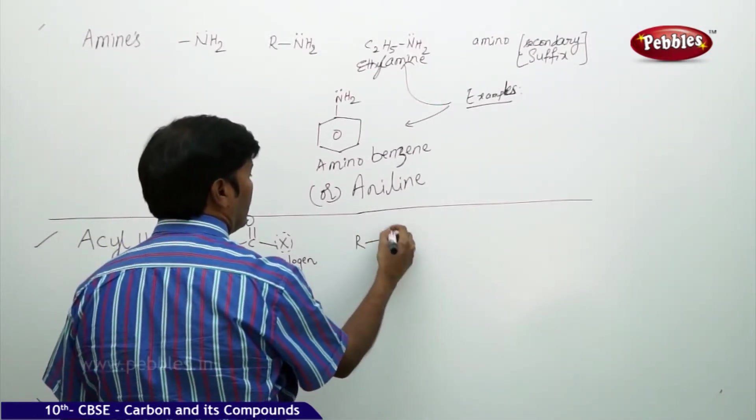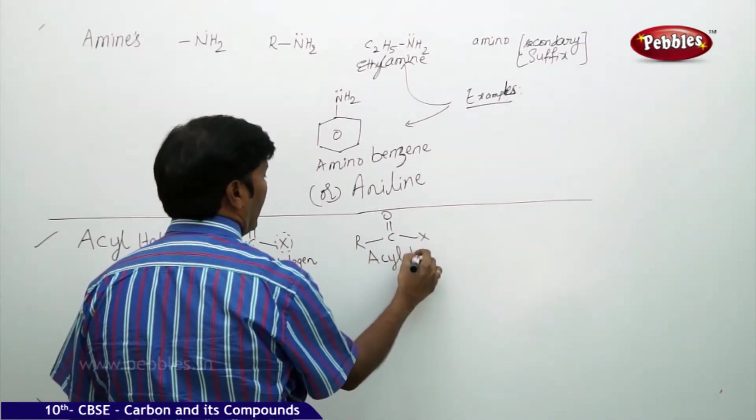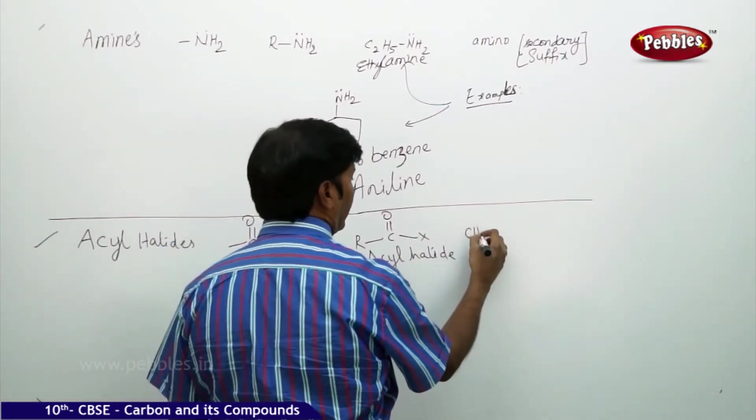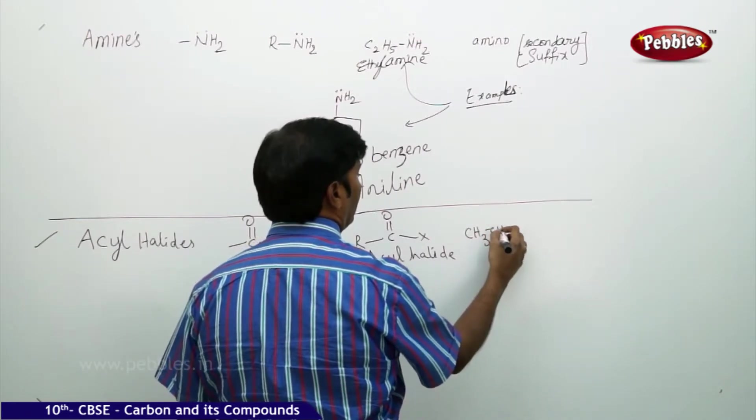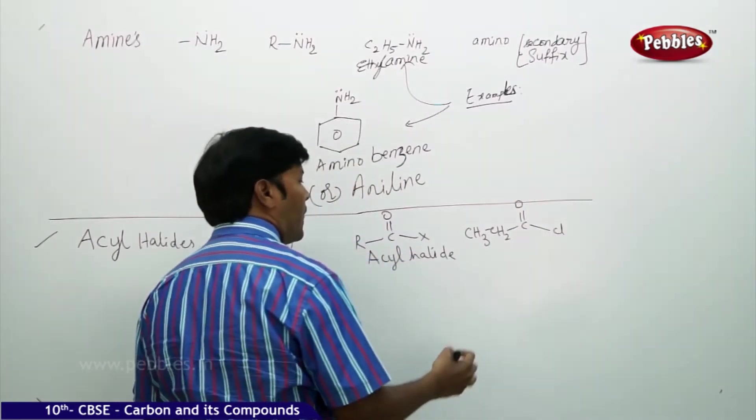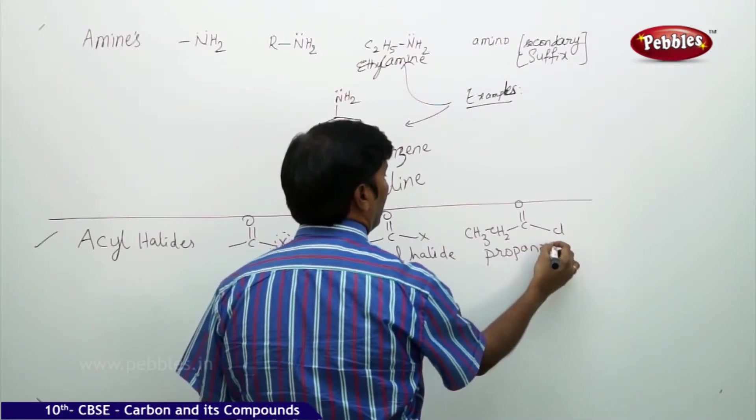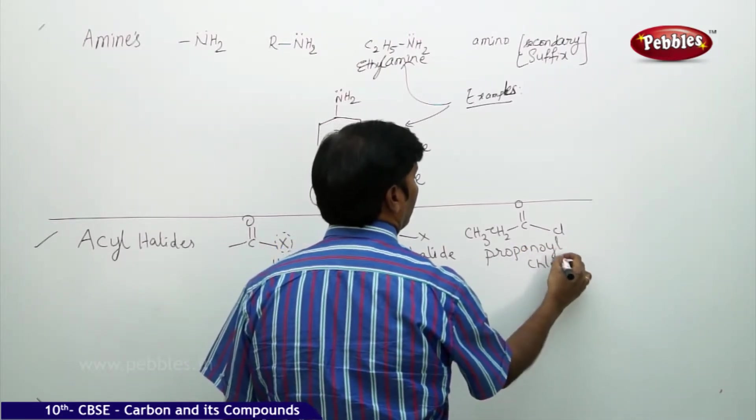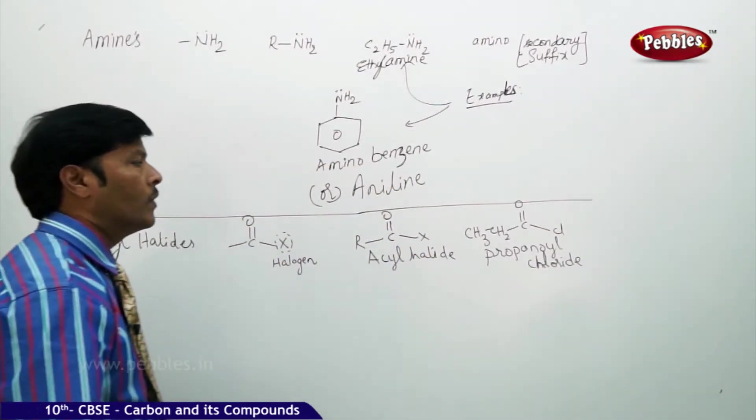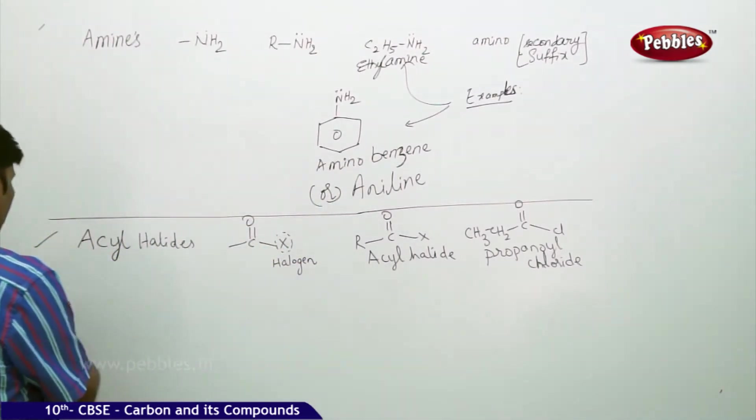Acyl halide example you can take: CH3-CH2-C=O-Cl. This is propanoyl chloride. Propanoyl chloride is the example which you can take.